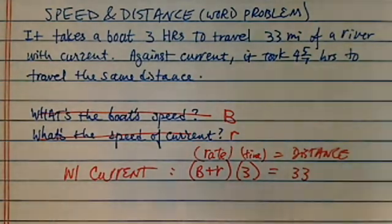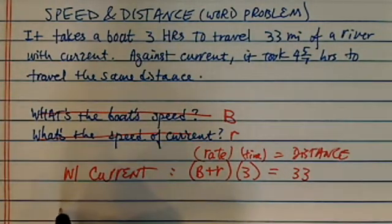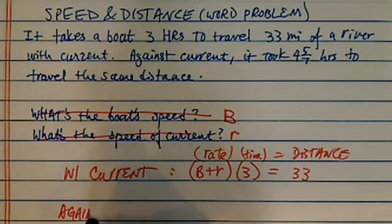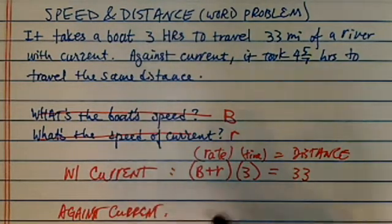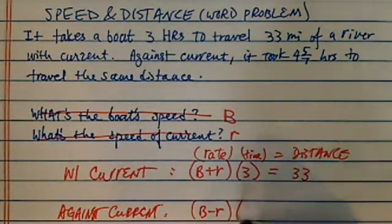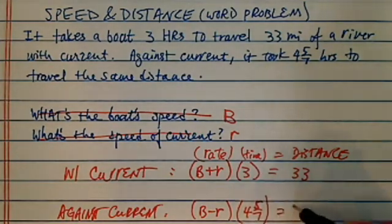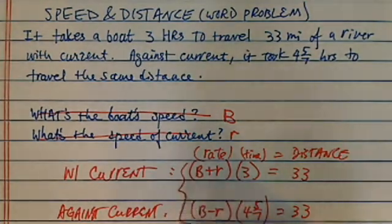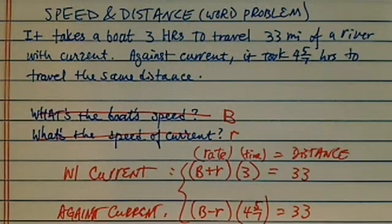Now going against the current, we're going slower, so it's boat speed minus the rate, b minus r. This time it took four and five-sevenths hours to travel the same distance — 33 miles. So simply put, we have two equations and two unknowns. That's the big picture.